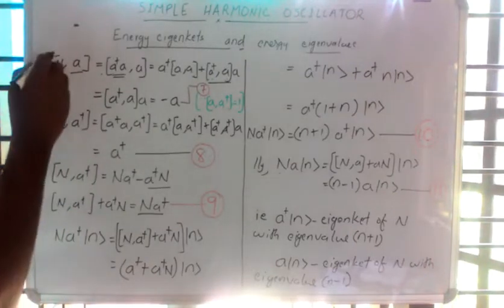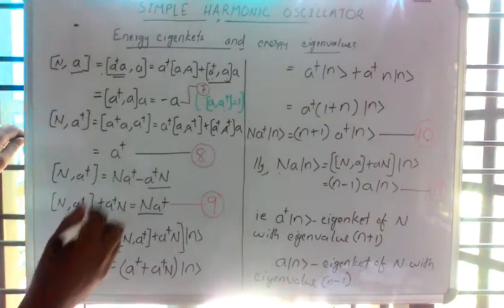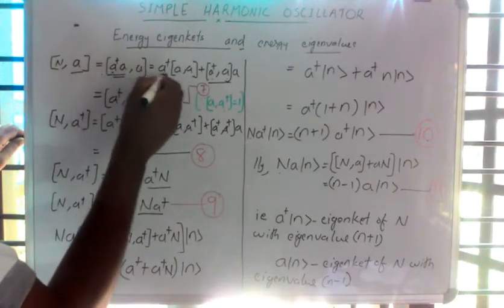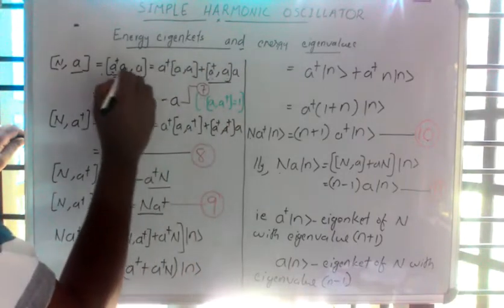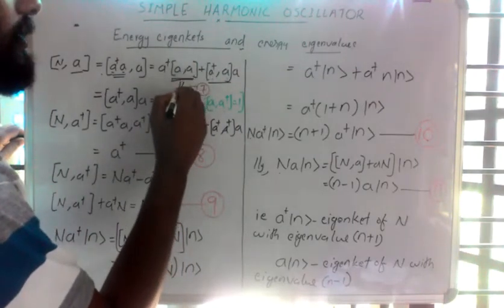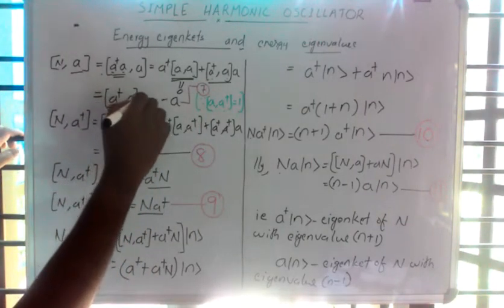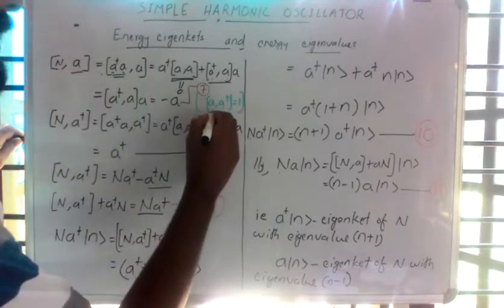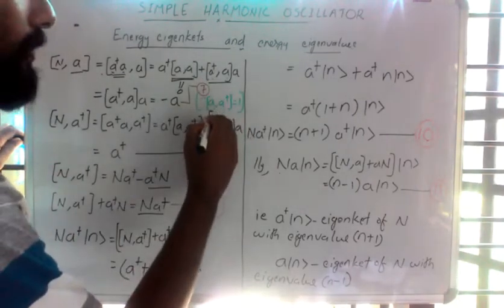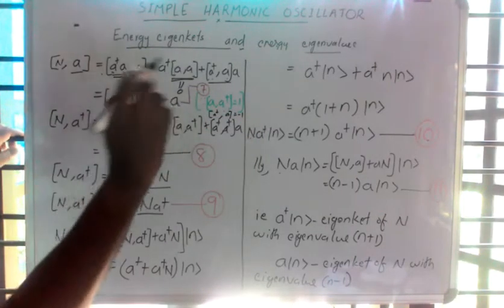For that, I am taking the commutator of N and a. We know N is the number operator, and that is equal to a dagger a. Using the property of the commutator bracket, the commutator of a with a is zero because a·a minus a·a equals zero. So the remaining term is the commutator of a dagger·a with a, that is equal to minus a, because we know the commutator of a and a dagger equals one, so the commutator of a dagger and a should be equal to minus one, giving us minus a.